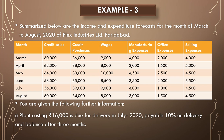This is example number three. The next example: summarized below are the income and expenditure forecast for the months of March to August 2020 of Flex Industries Limited, Faridabad. They have given us months from March to August — credit sales, credit purchases, wages, manufacturing expenses, office expenses, and selling expenses.